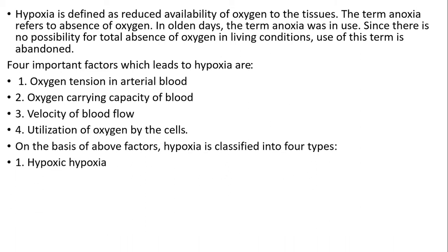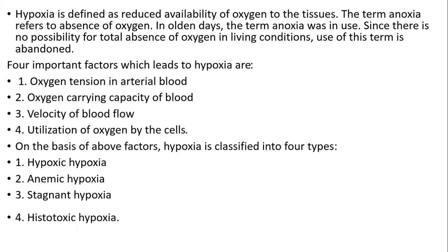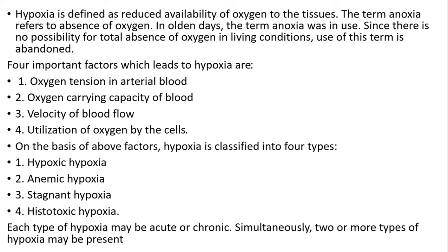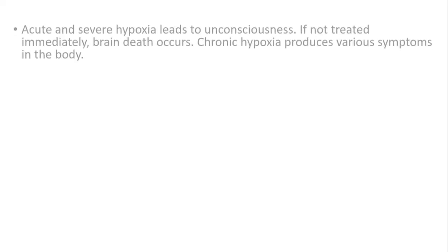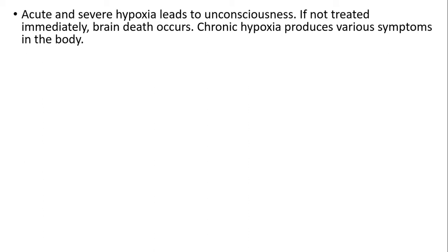They are hypoxic hypoxia, anemic hypoxia, stagnant hypoxia, and histotoxic hypoxia. Each type of hypoxia may be acute or chronic. Two or more types of hypoxia may be present together.